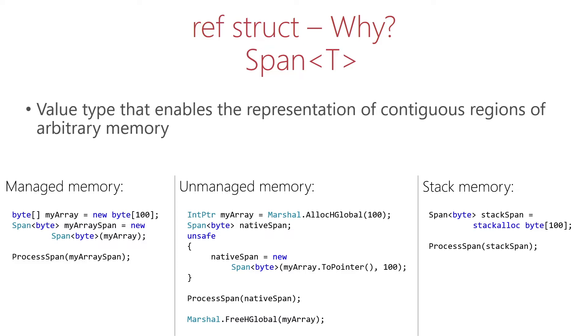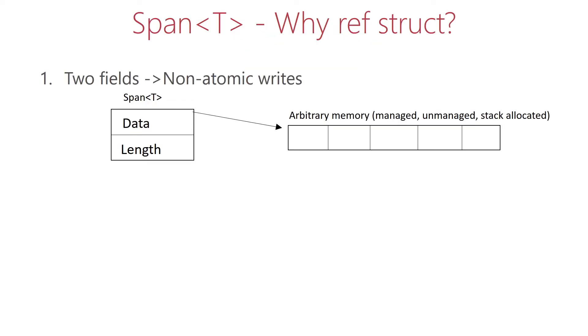Alright, let's go back to the original topic. So why do we need ref struct to implement a Span? The first reason is that Span basically contains two fields. The first field points to the data itself and the second field stores the length of the wrapped memory.